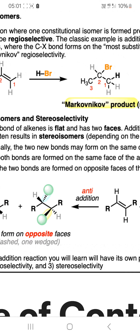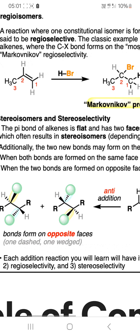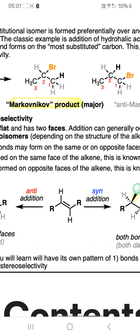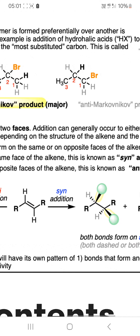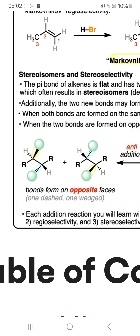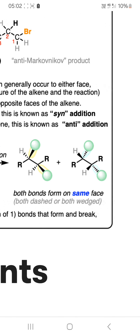Additionally, the two new bonds may form on the same or opposite faces of the alkene. When both bonds are formed on the same face of the alkene, this is known as syn addition. You can see the trans result with anti addition, where bonds form on opposite faces. With syn addition, bonds form on the same face — both shown as dash or both as wedge.